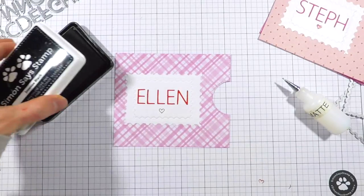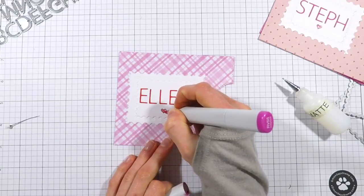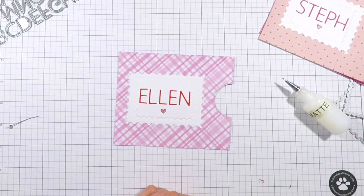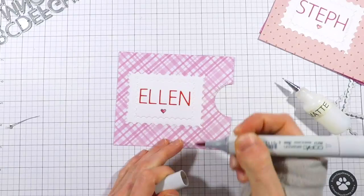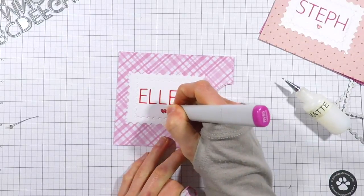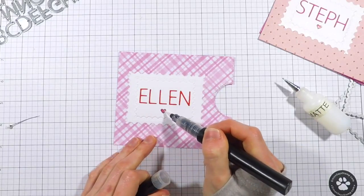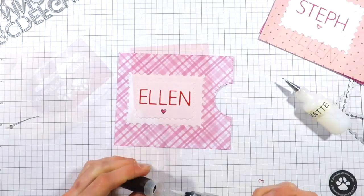After I've applied all of my little letters down, I'm taking one of the little hearts from the Neat and Tangled My Favorite Nut stamp set. I'll stamp that down underneath Ellen's name. On the envelope that I made for Heidi, I stamped it to the right of her name because I had a little bit of extra space. Then I colored in the little hearts with some Copic markers and I also added some sparkle onto the hearts using a Spectrum Noir clear overlay pen.